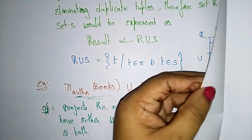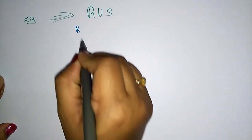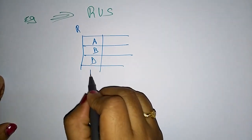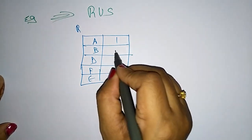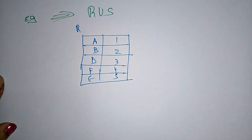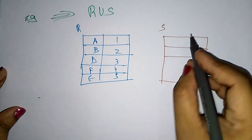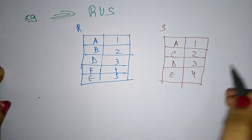Let me take one more example so you can understand clearly what output you get for Union. Let's take R as one table consisting of the fields: A, B, D, F — with values 1, 2, 3, 4, 5. And let's take another table S with fields A, C, D, E.